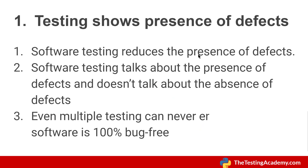The first principle says that testing shows the presence of defects. These principles will give you the mindset of what exactly software testing is. It basically means that whenever we are doing software testing, it's going to reduce the number of defects but it's not going to remove 100% of bugs. Even after multiple rounds of testing, we cannot produce 100% bug-free software.